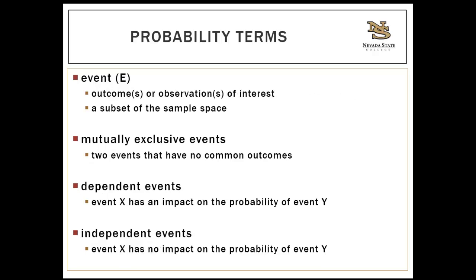An event, abbreviated as uppercase E, is the outcome or observation of interest — it's a subset of the sample space, specifically the events you are actually interested in. For example, you could ask: what is the probability that someone in good condition will walk into the hospital? Or back to the dice example: what is the probability of rolling two dice with a sum of five? That's your specific outcome of interest — your event.